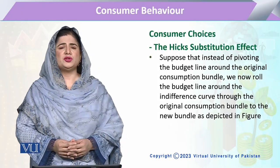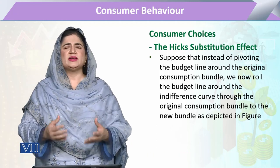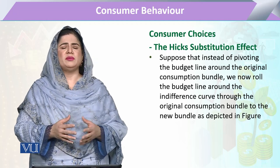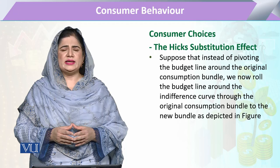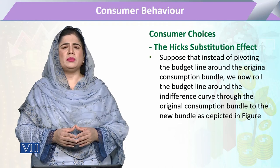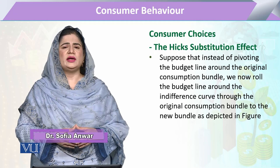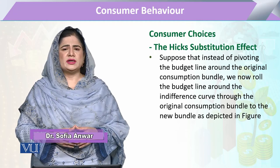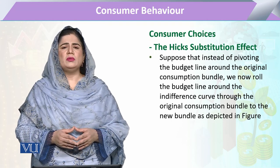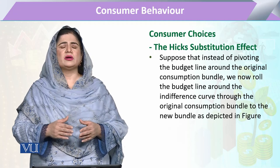That is the Hicks substitution effect. The Hicks substitution effect is the substitution effect that we measure along the compensated demand curve. Whenever the price of a commodity changes, keeping the money income and the price of other goods constant, the budget line pivots. If the price of commodity X decreases, the consumer's real income increases and the budget line pivots outward.